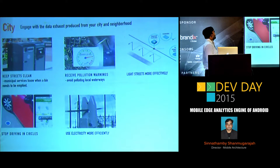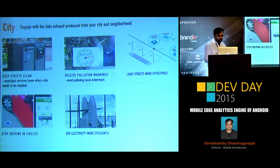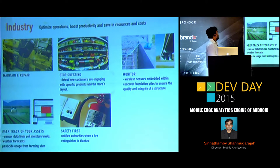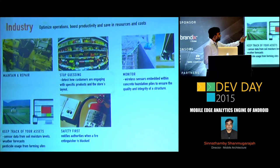In smart cities, you can keep the city clean — a garbage lorry can be dispatched only when the dustbin is full. There are also applications in construction like smart street lights, pollution monitoring, and driving. In industry, IoT is used for maintaining and repairing machinery, shopping, monitoring, checking construction material composition, agriculture, and safety.